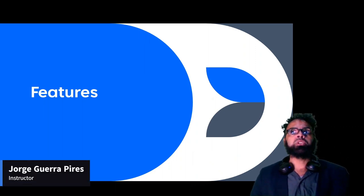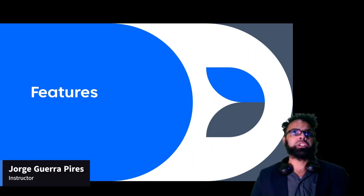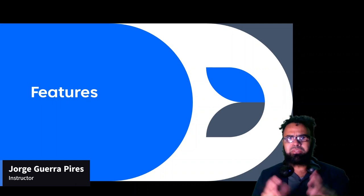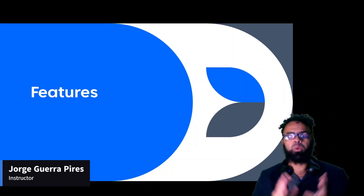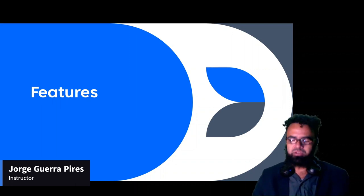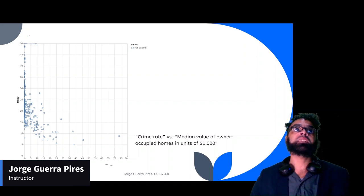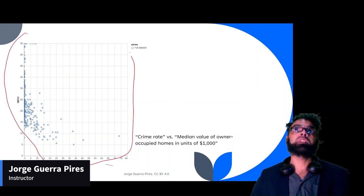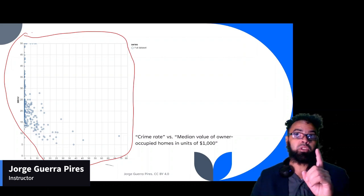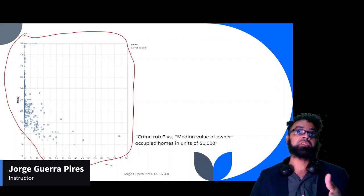One word that you are going to hear a lot is called feature. I'm going to say a lot about feature. What's the feature in the context of artificial network? A feature is how your data is just one of your factors to explain.